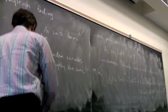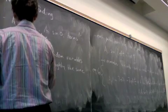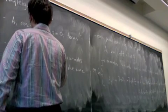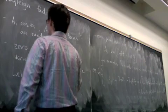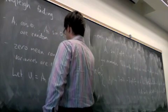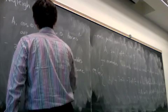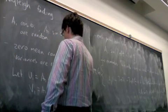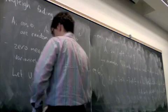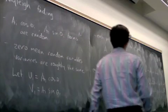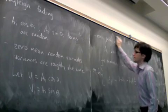And what we can say is: let u_i equal a_i cosine theta_i, and let v_i equal a_i sine theta_i. And with a huge number of paths, we get the following.